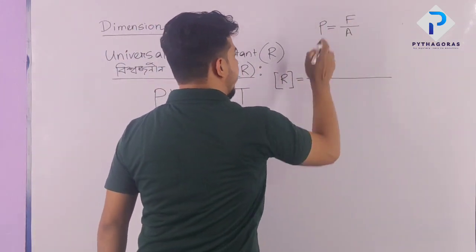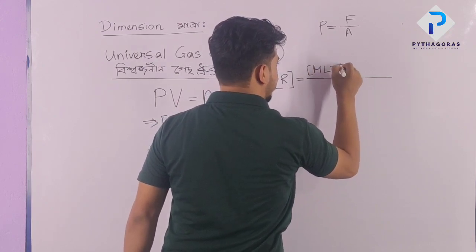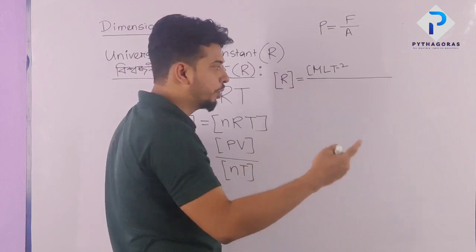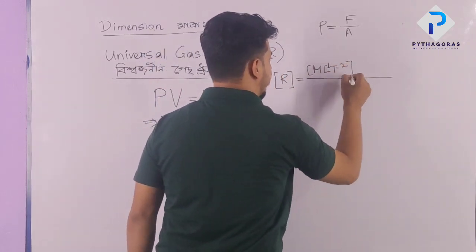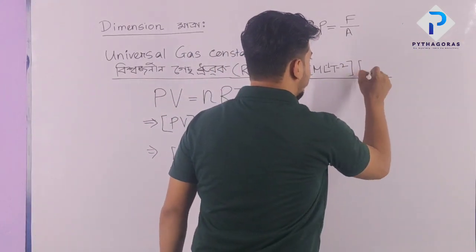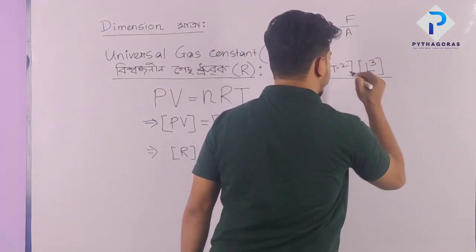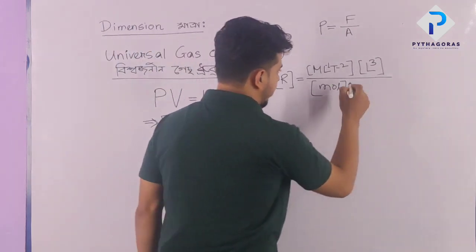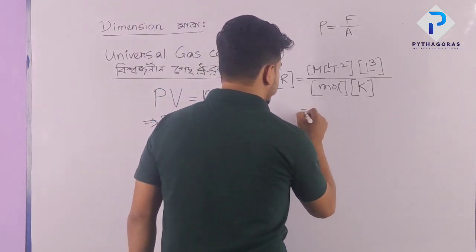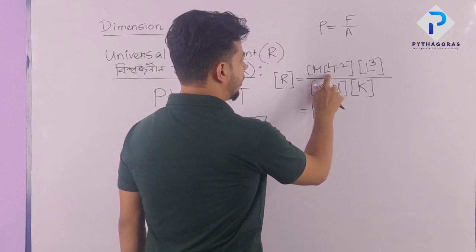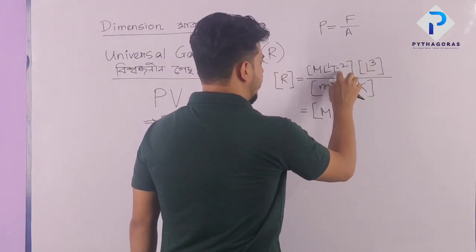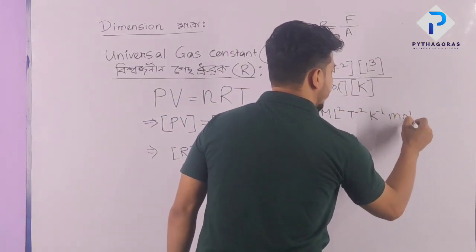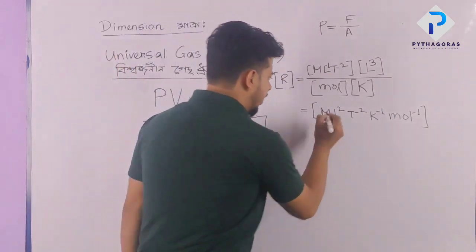Pressure dimension is force divided by area: M L T minus 2 divided by L square equals M L minus 1 T minus 2. Volume dimension is L cube. Temperature dimension is K. Number of moles dimension is mol. So R dimension is M L squared T to the power minus 2, K to the power minus 1, mol to the power minus 1.